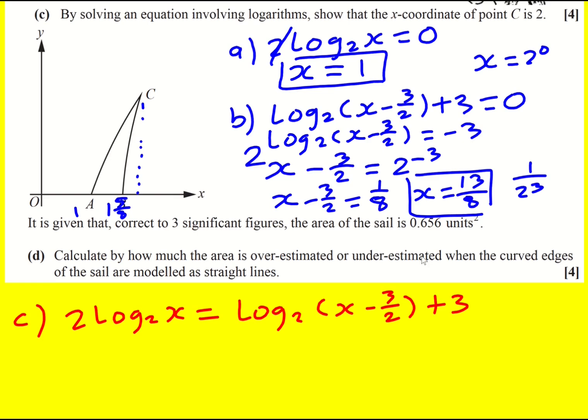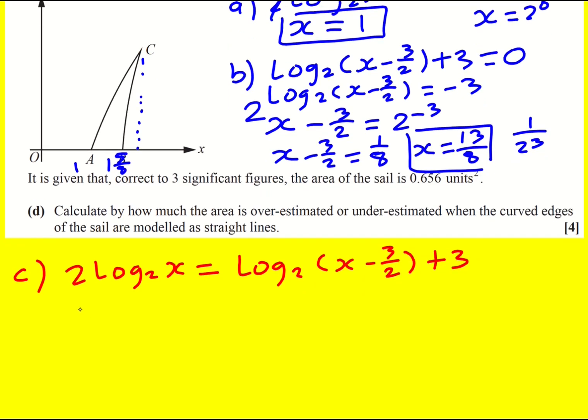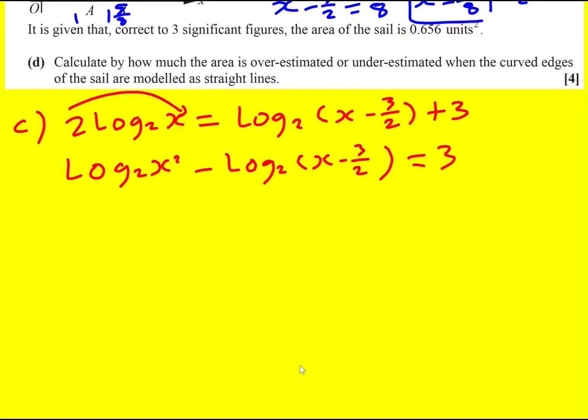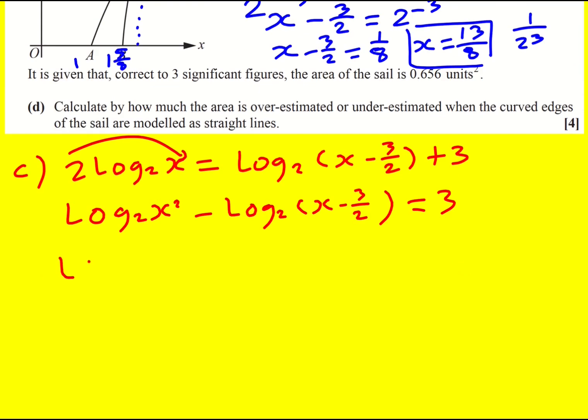The steps to do this are to combine the logs. First, I'm going to raise x to the power of 2. I'm going to use the third rule of logs and bring the power up there. And I'm going to minus log base 2 of (x - 3/2). You have to get them both as logs without anything in front of them before you then use a rule of logs to combine them. Now we can use the rule where we subtract them. So we're going to divide them inside the log: x² over (x - 3/2) equals 3.